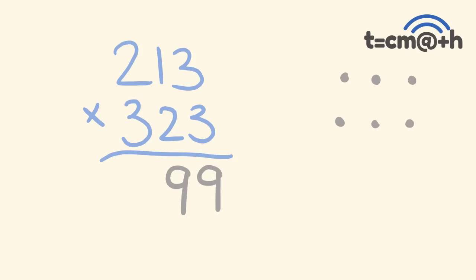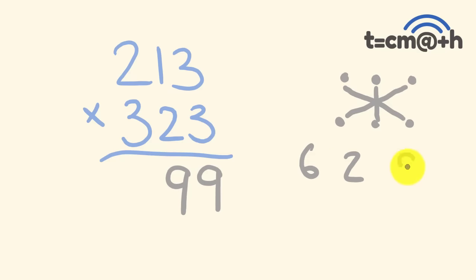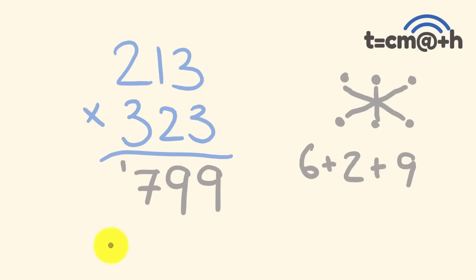For our hundreds part of the answer, we're going to be multiplying: hundreds times units — which gives us hundreds; tens times tens — which also gives hundreds; and units times hundreds — which also gives hundreds. We add our answers together. So 2 times 3 is 6, 1 times 2 is 2, and 3 times 3 is 9. 6 plus 2 is 8, plus 9 is 17. We put the 7 here and carry the 1 across, like you would with regular multiplication.